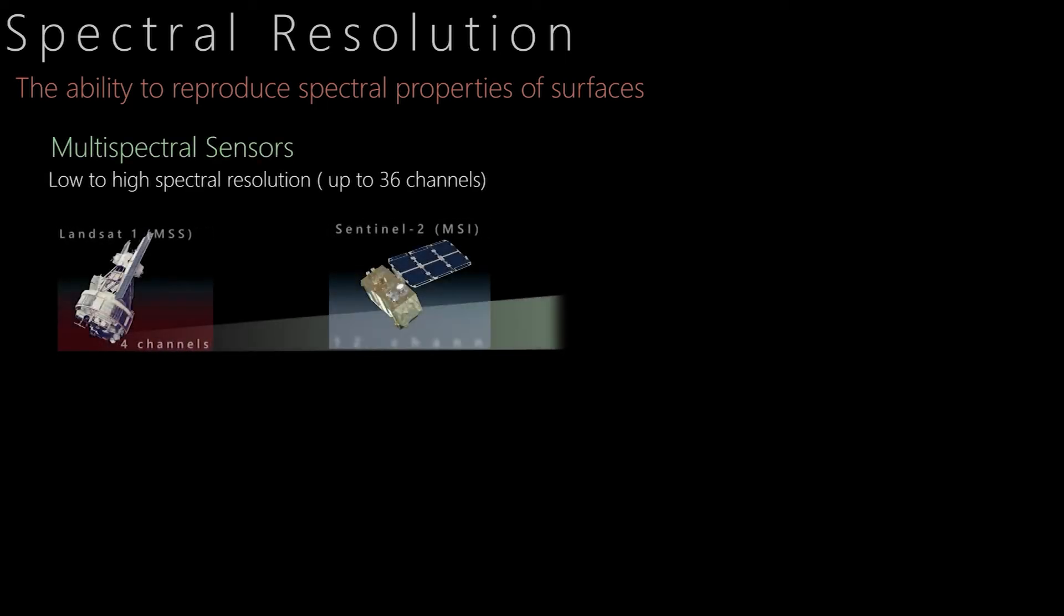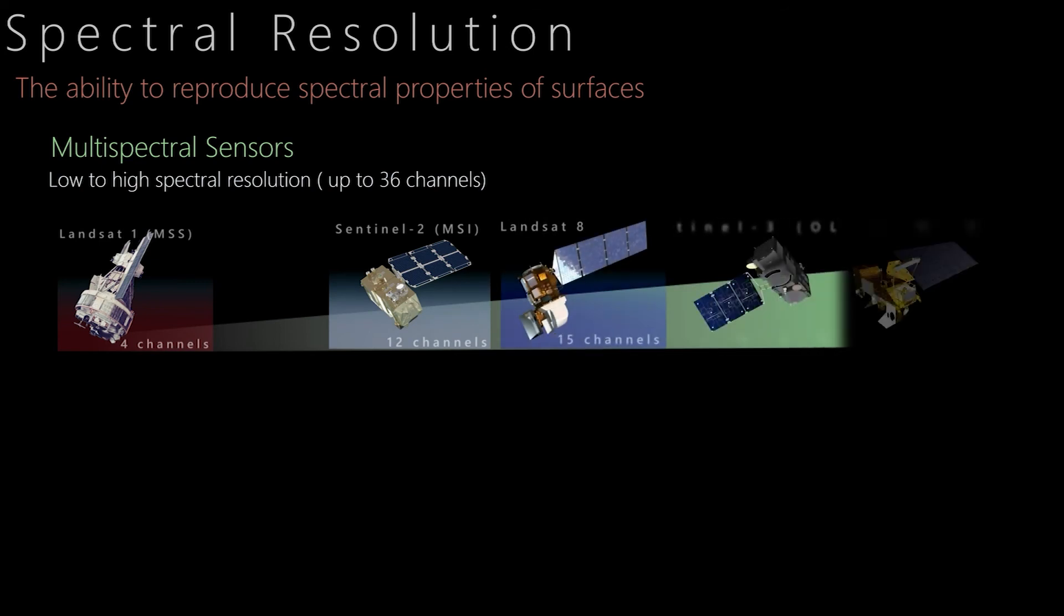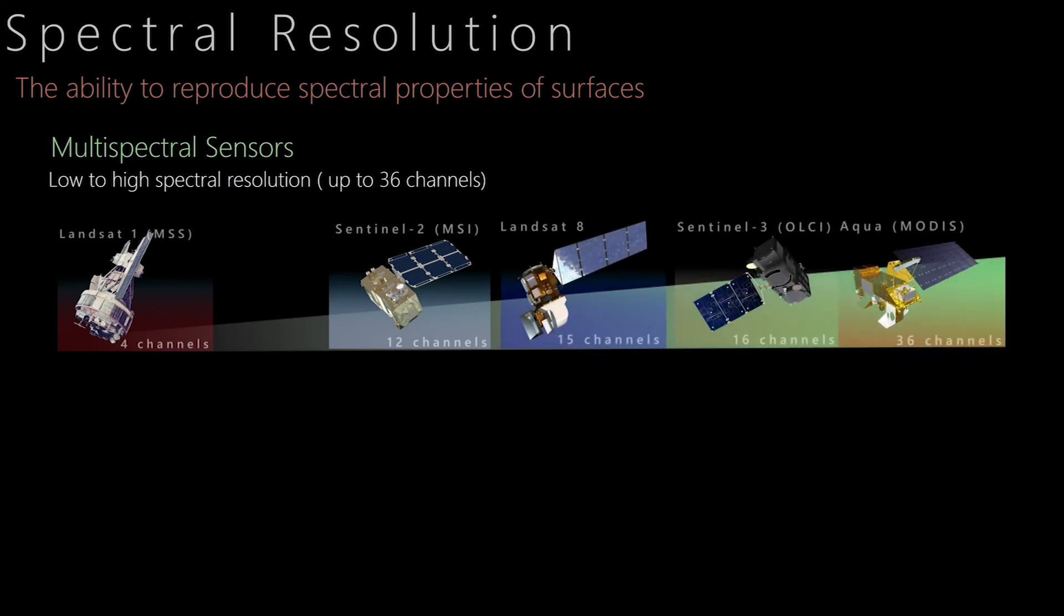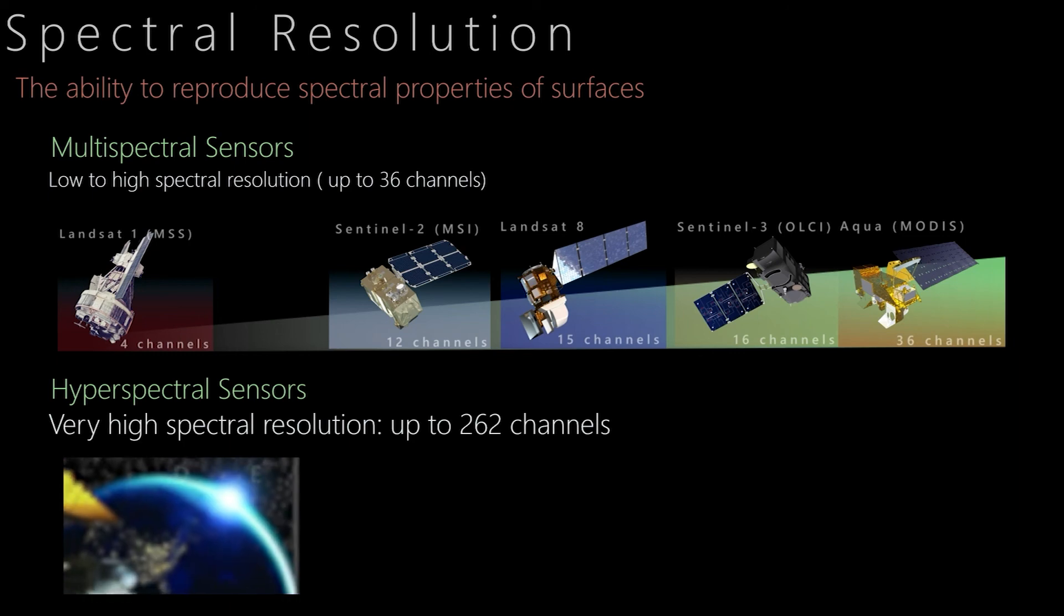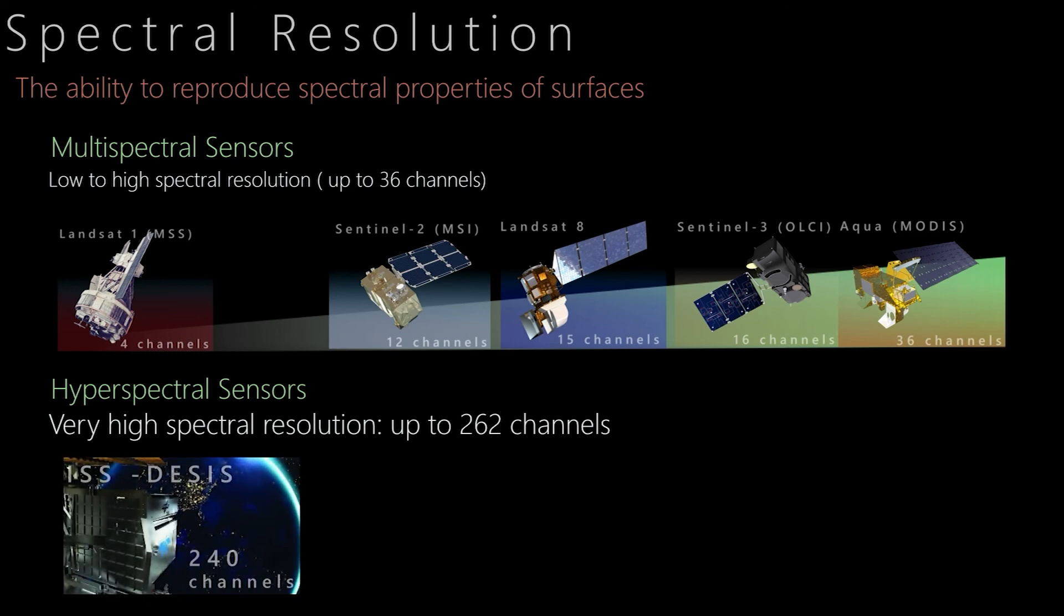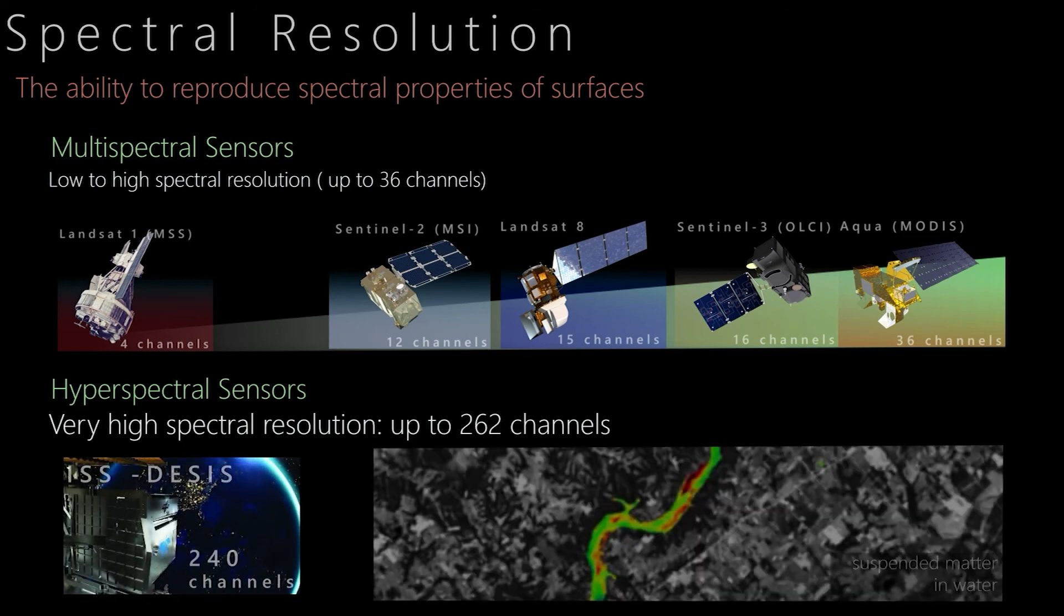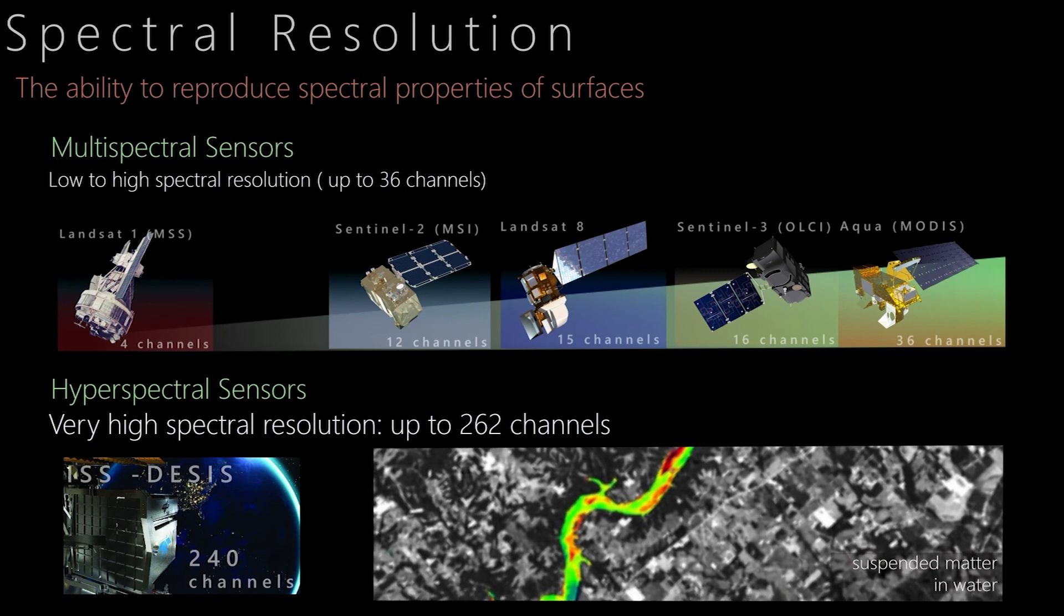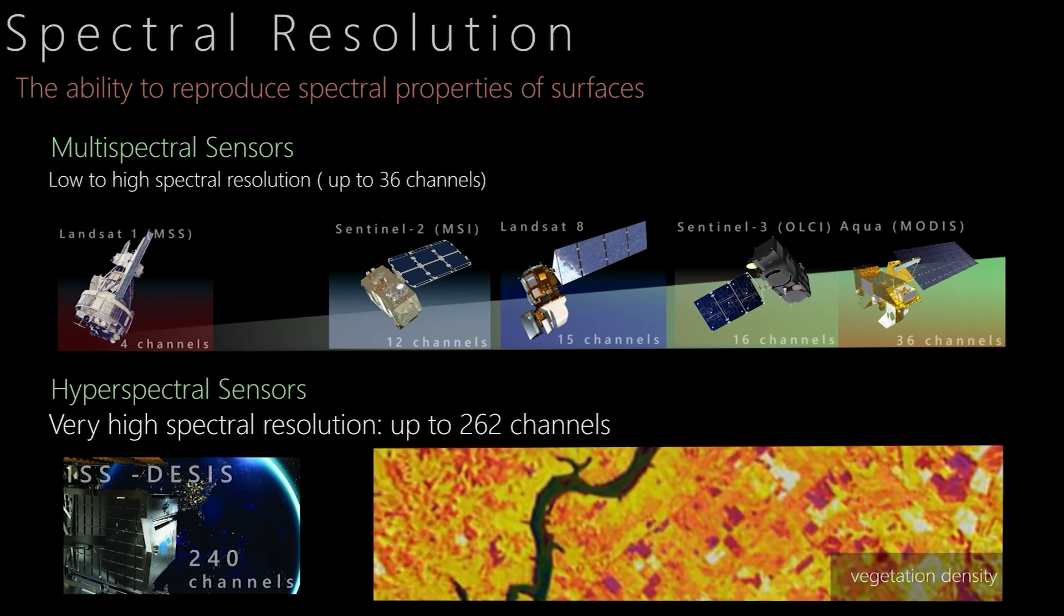The spectral resolution of sensors gives us information about their ability to reproduce the spectral properties of surfaces as accurately as possible. The higher the number of spectral channels, the higher the spectral resolution. The spectral resolution has increased in recent years, and today we're already working with hyperspectral sensor systems that have many hundreds of channels and allow us to get even more and more accurate information about the surface of our planet.